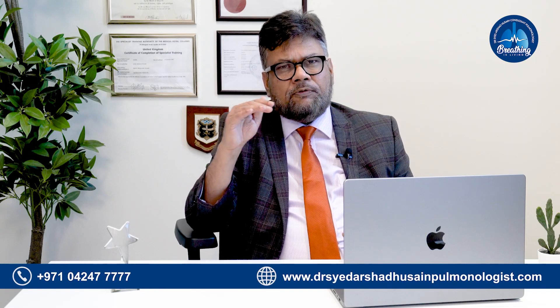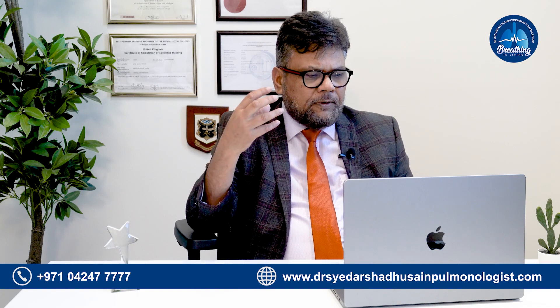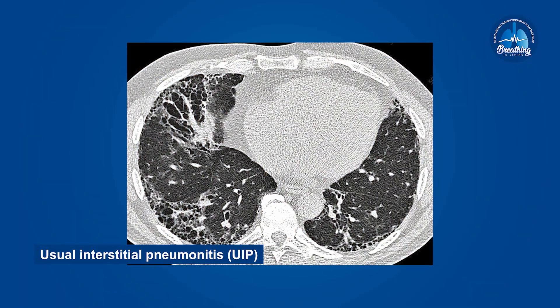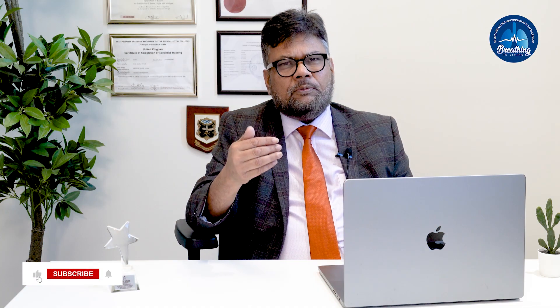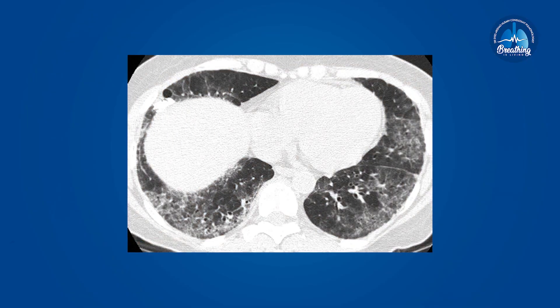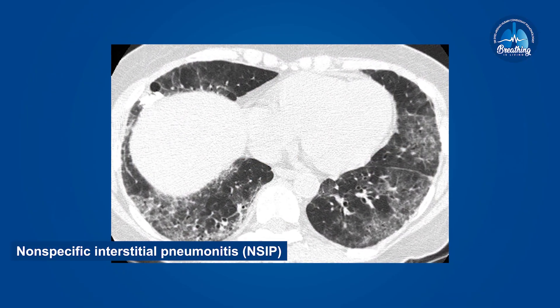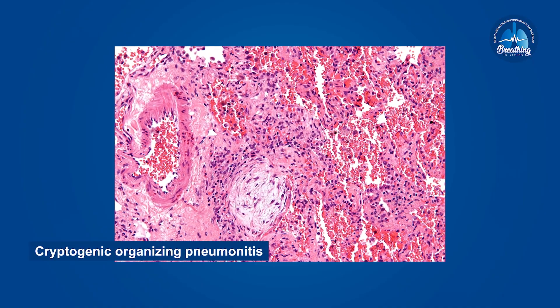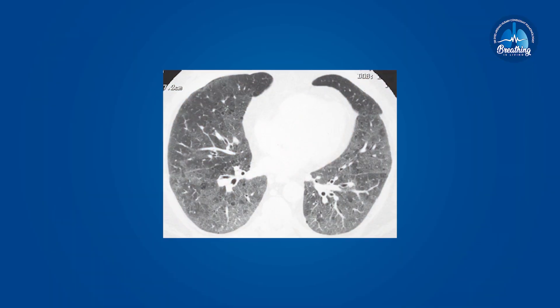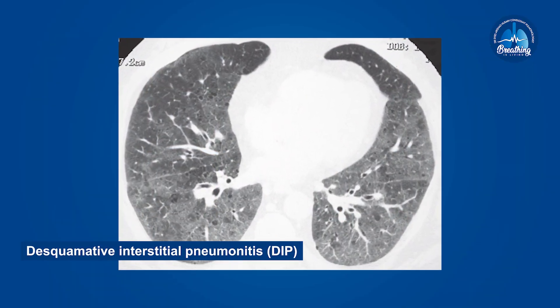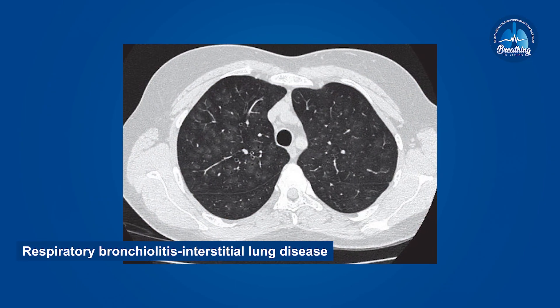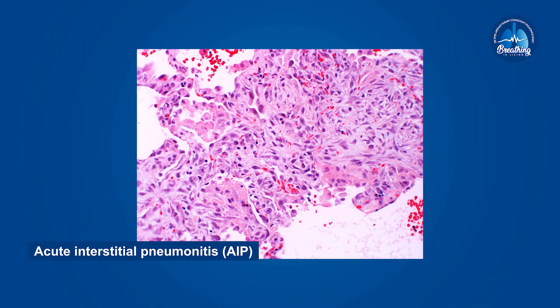Different classifications and categorizations do exist. To make it simple, I have classified this into an idiopathic type of interstitial lung disease or lung fibrosis. In that we can include usual interstitial pneumonitis (UIP), which is a severe spectrum of disease that does not usually respond to steroid treatment; non-specific interstitial pneumonitis (NSIP), which is the form that responds very well to steroid treatment; cryptogenic organizing pneumonitis, which again responds very well to oral steroids; desquamative interstitial pneumonitis (DIP); respiratory bronchiolitis interstitial lung disease (RBILD); and also acute interstitial pneumonitis. So there are many types of idiopathic interstitial lung disease.